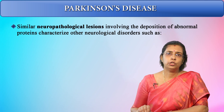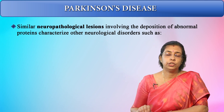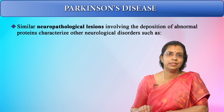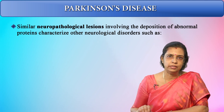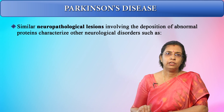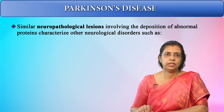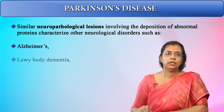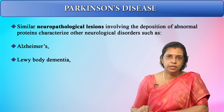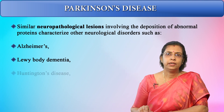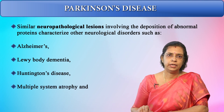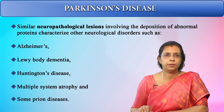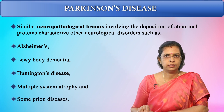Similar neuropathological lesions involving deposition of abnormal proteins characterize other neurological disorders such as Alzheimer's disease, Lewy body dementia, Huntington's disease, multiple system atrophy, and some prion diseases.